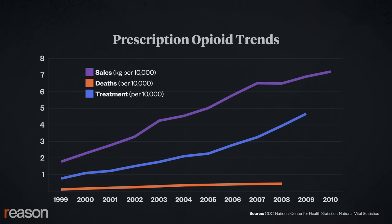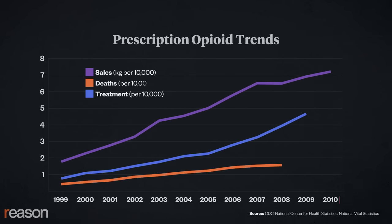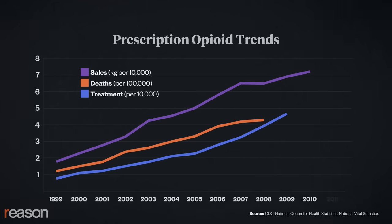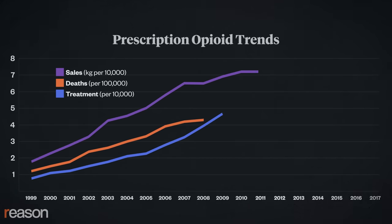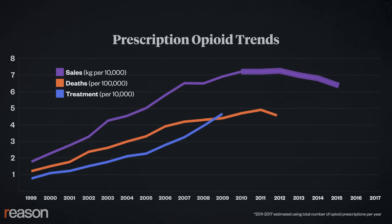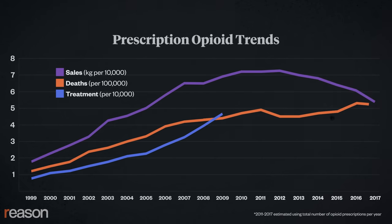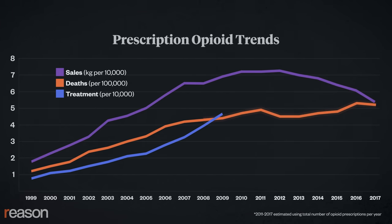Another red flag: this chart doesn't go past 2010, even though the report came out in 2017. There's a reason for that. In the years that followed, the pattern rapidly reversed, with opioid prescriptions falling dramatically while drug-related deaths continued to increase.